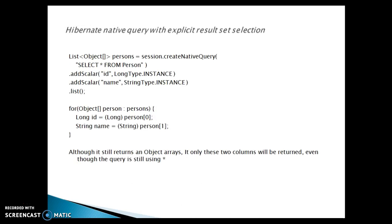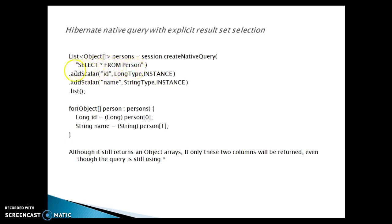For explicit result set selection, you call createNativeQuery with SELECT * FROM employee, then call the addScalar method, passing the column name and explicitly telling Hibernate the type — for example, ID is LongType.INSTANCE and name is StringType.INSTANCE. Calling list still returns an Object array to iterate and type-cast. Even though the query says SELECT *, you are selecting only the specified columns, so only those column values are returned.